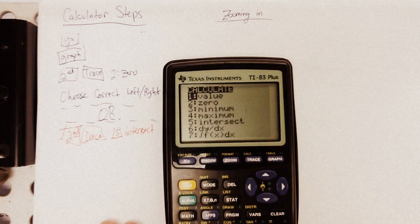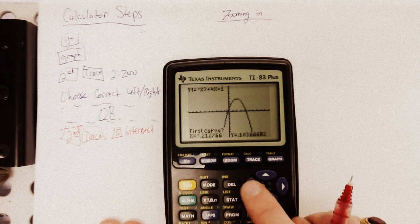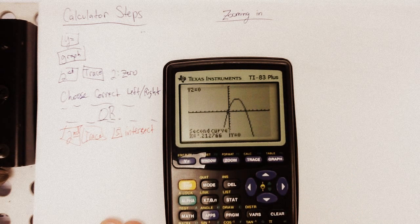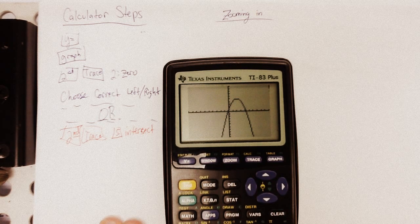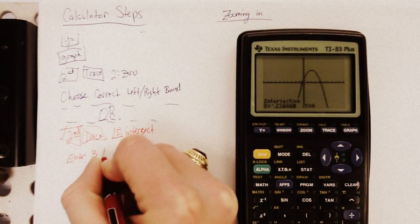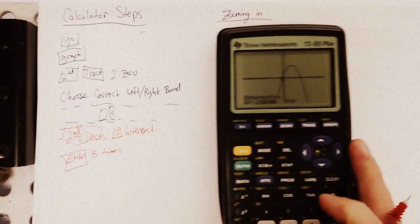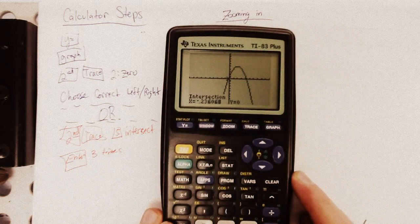Hopefully, you remember that in algebra one, and I can go over it more in class if we need to. But, you're trying to figure out where your graph crosses the X axis. So, Y2 is going to have to be zero in this case. All right. So, second trace intersect. Now, get your X close to where it crosses. First curve, say, all right. Second curve, say, okay, enter. And then when it says guess, enter one more time. So, enter three times.